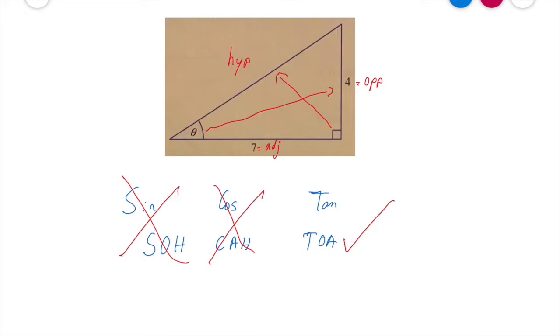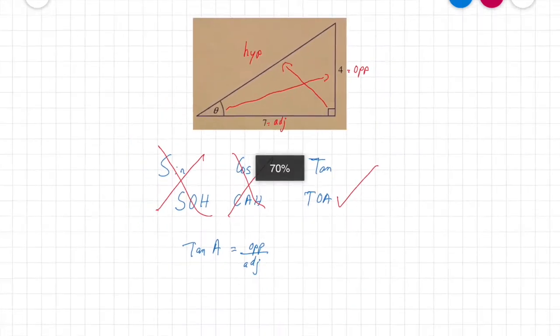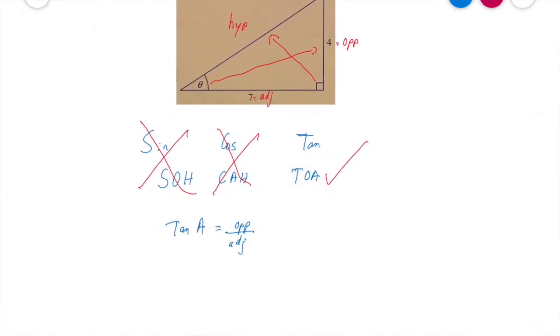So let's continue on. What I do now is I'm going to write out my little thing for tan. So tan a is equal to the opposite over the adjacent. I know tan a is the opposite over adjacent.